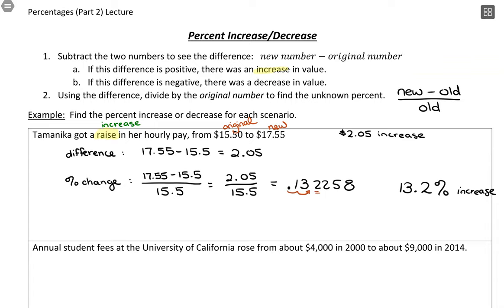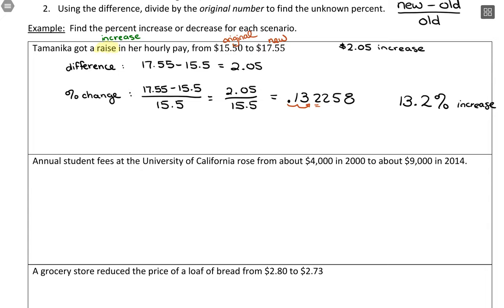Annual student fees at the University of California rose from about $4,000 to about $9,000 from 2000 to 2014. If we think about this starting value or the old value, that would be the $4,000. You can see it's older just in terms of the years here. So $4,000 is the original, and then we saw change happen as time passed, so the new value is the $9,000.